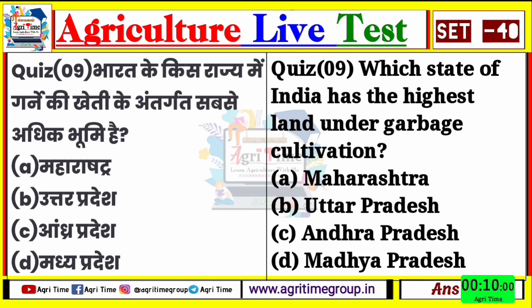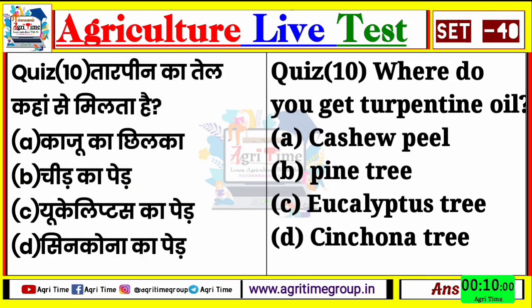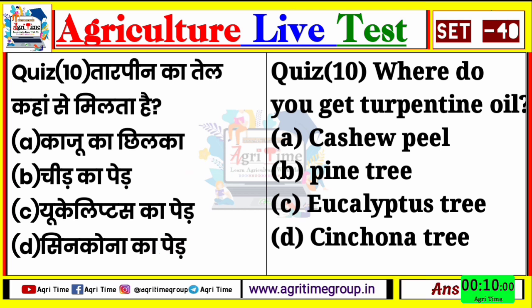चलिए बढ़ते हैं question number 10 की ओर। ये रहा आपके screen पर, unique सा भी है - कभी सुना नहीं होगा आपने। Where do you get terpene oil? Options दिया है: काजू के छिलके से, चीड़ के पेड़ से, eucalyptus के पेड़ से, या फिर cinchona के पेड़ से। Comment कीजिए quiz 10 का right answer क्या होगा।